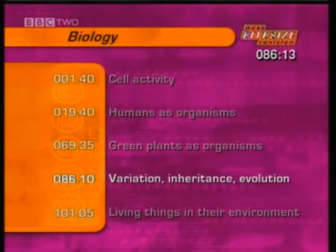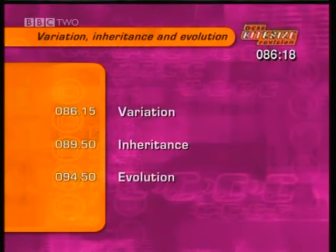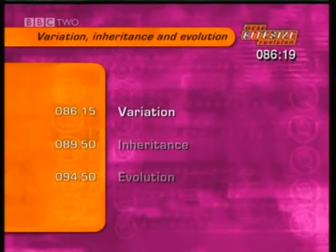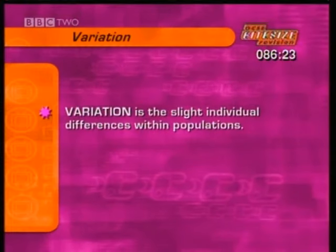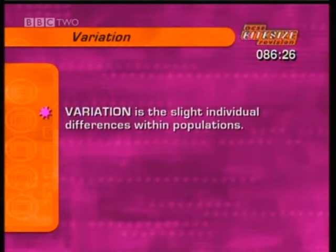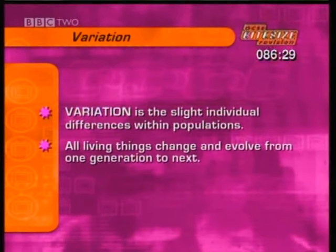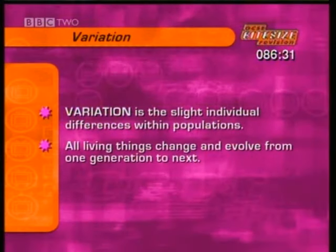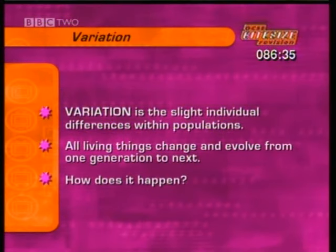Variation, inheritance, and evolution in animals and plants. We'll start by looking at variation. The term variation refers to the slight individual differences within populations. All living things change and evolve from one generation to the next, and as they do so, more variation is introduced. But how does it happen?